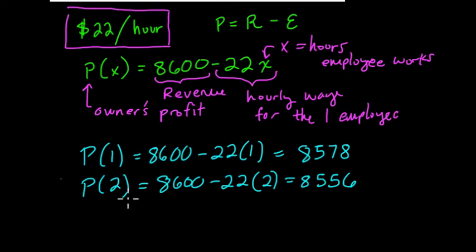In other words, as we keep doing this, we see that X is always being multiplied by 22, which corresponds to this idea that the employee is making $22 an hour. And that amount, the amount you're paying out to your employee, takes away from the profit for the owner.